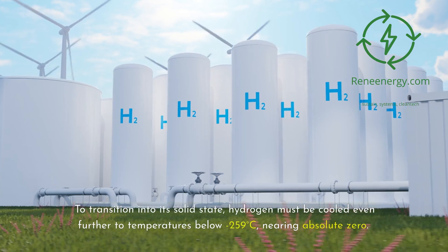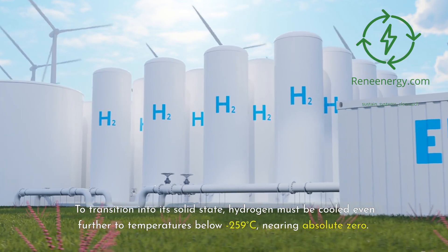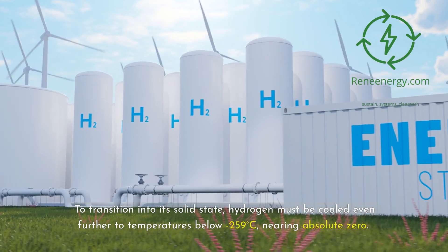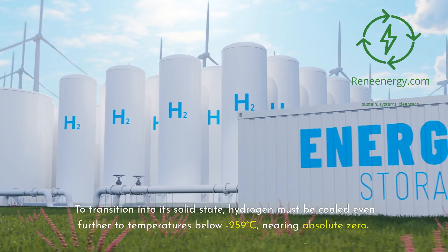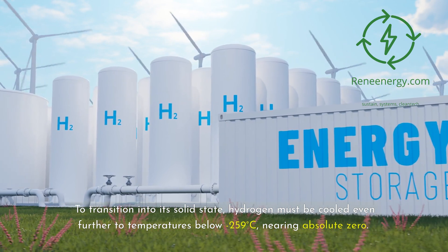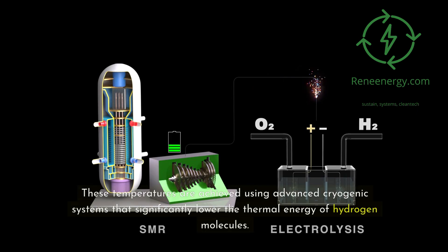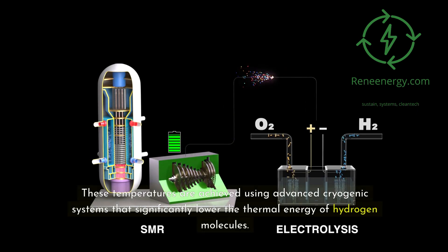To transition into its solid state, hydrogen must be cooled even further to temperatures below minus 259 degrees Celsius, nearing absolute zero. These temperatures are achieved using advanced cryogenic systems that significantly lower the thermal energy of hydrogen molecules.